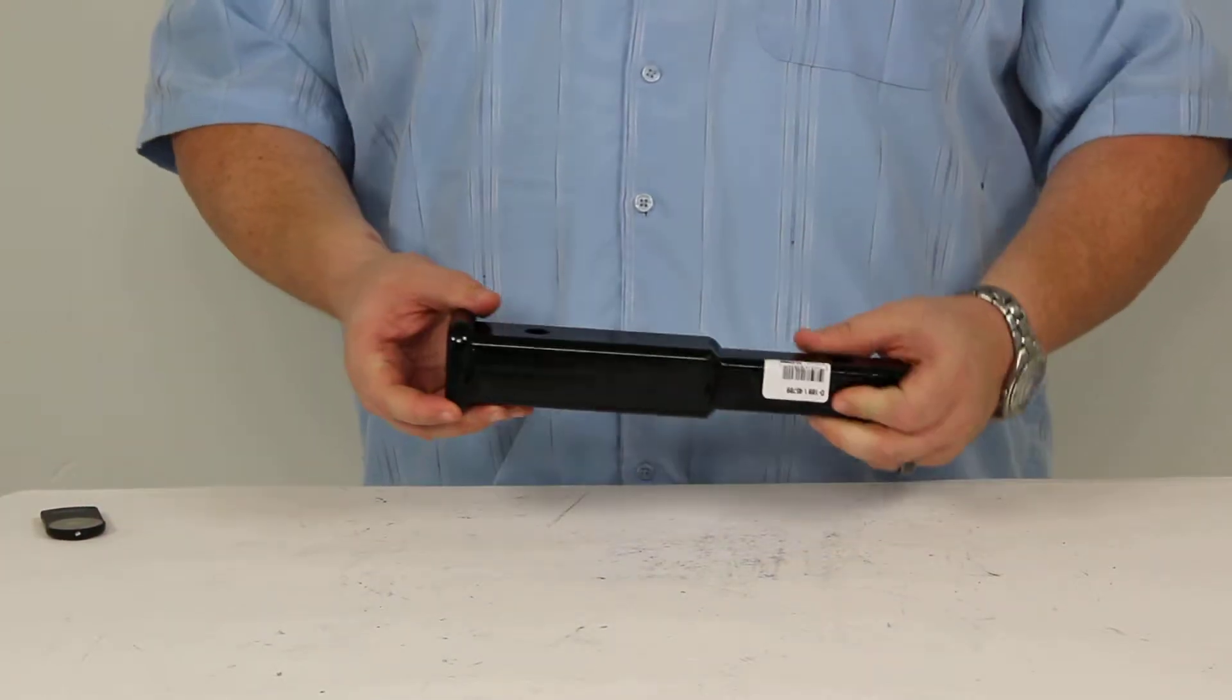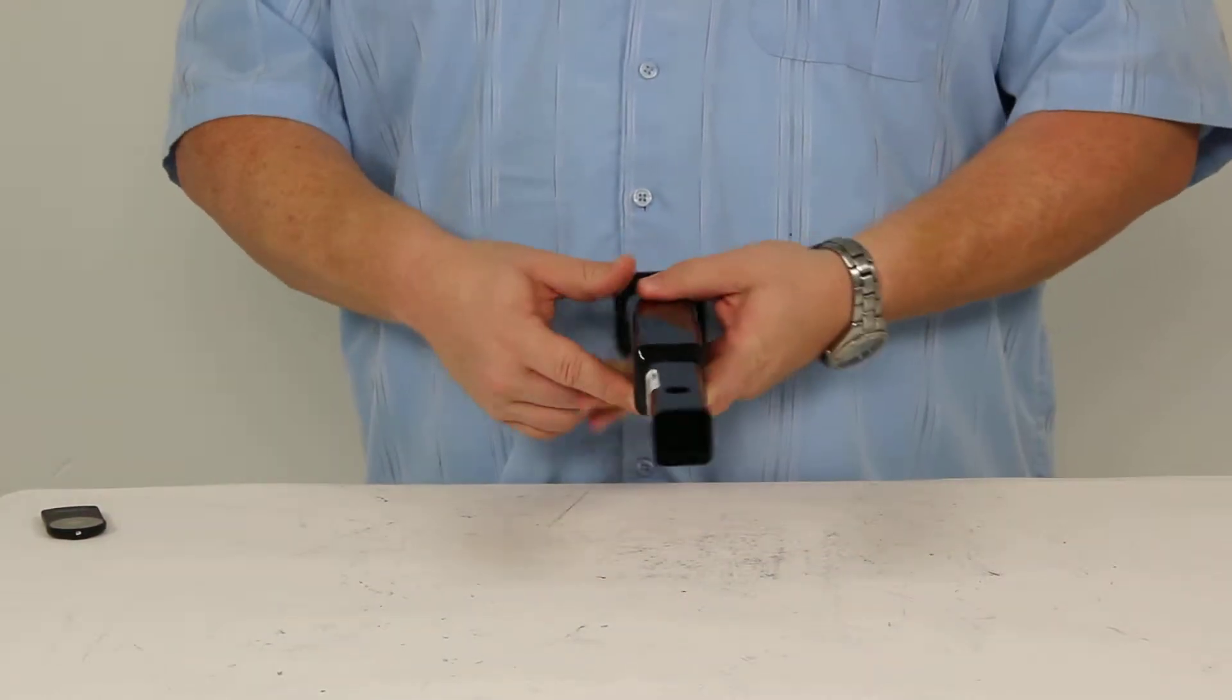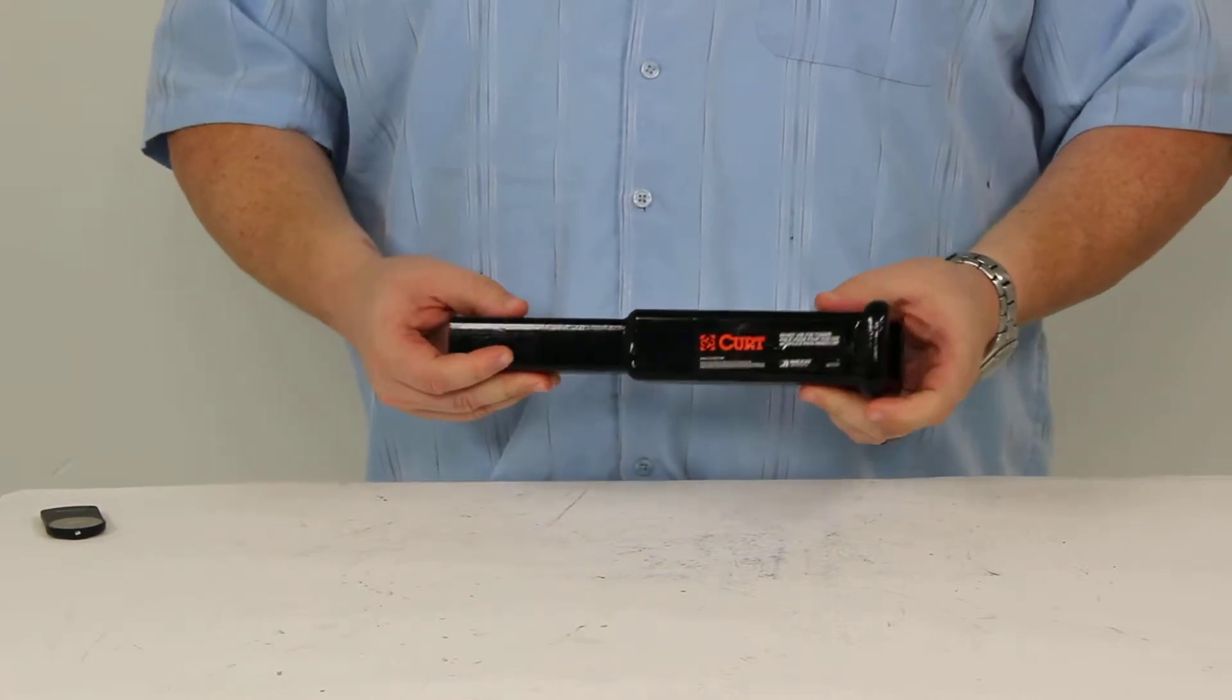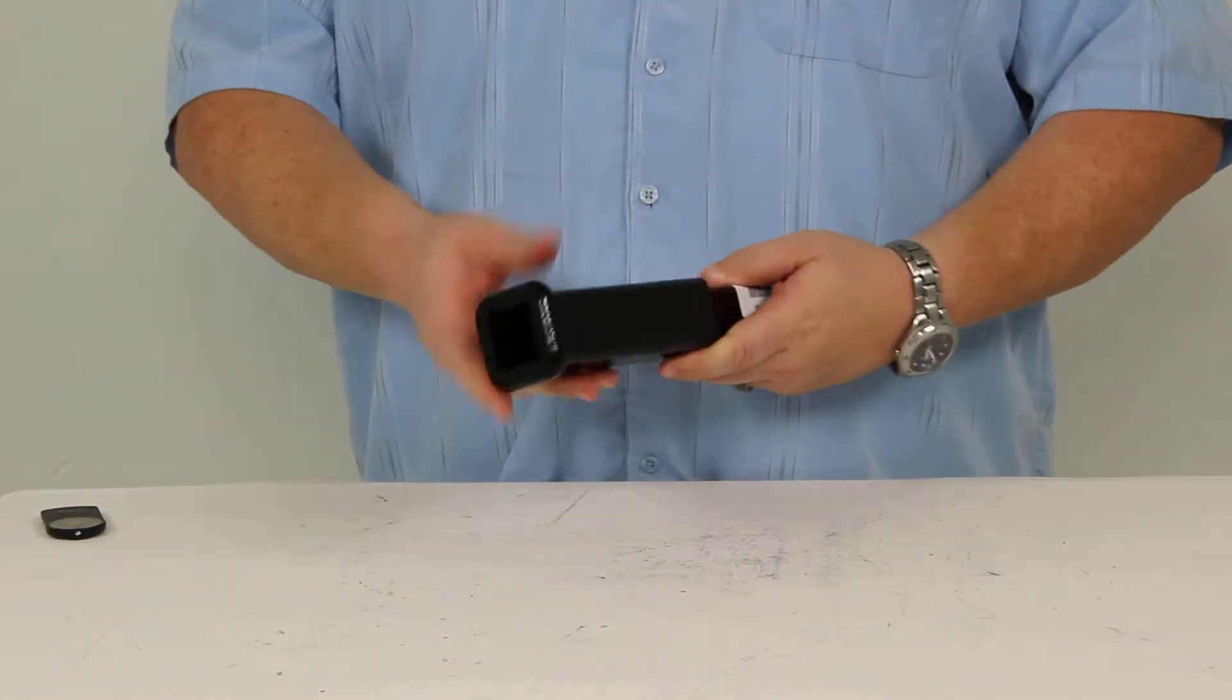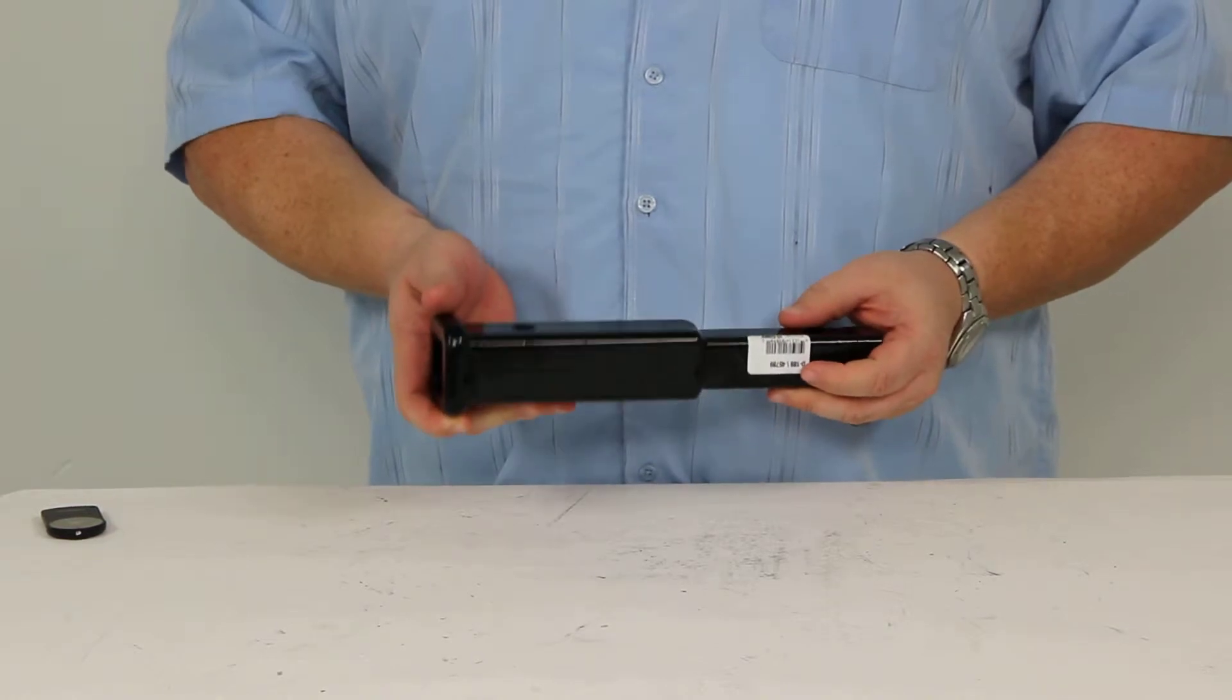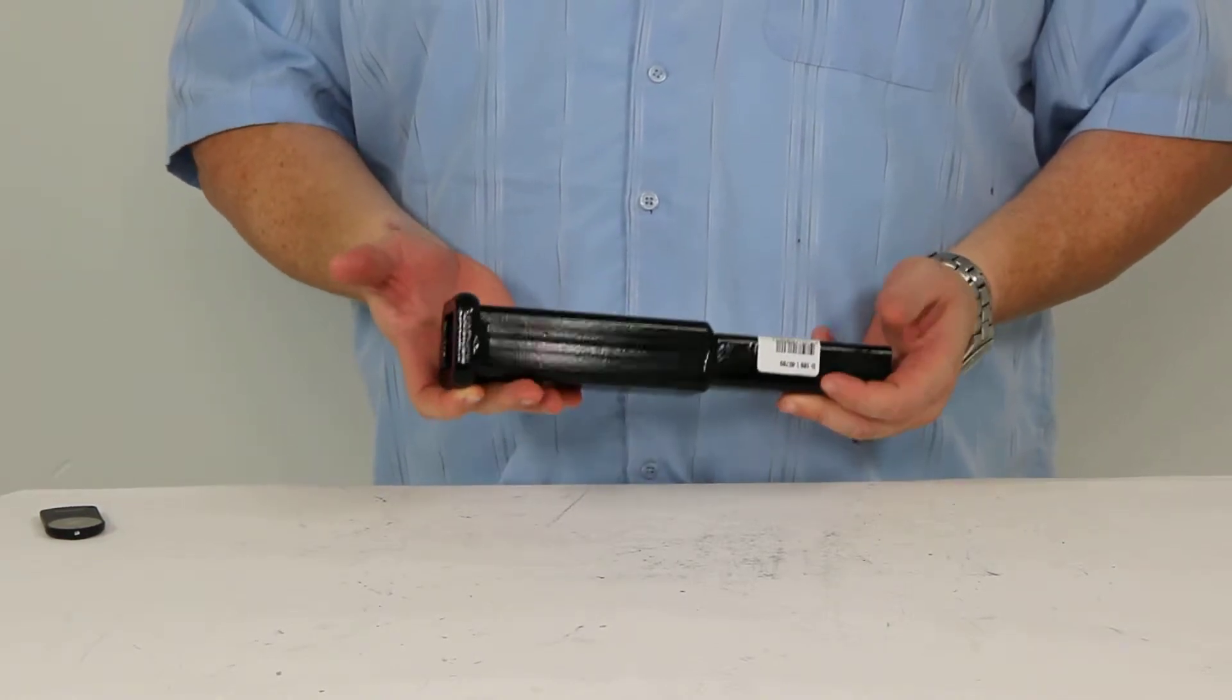Today we're going to take a look at the Curt Hitch Extender for 1 1/4 inch trailer hitch receivers, number D189. This is for use with class 1 and 2 hitch accessories like bike racks and cargo carriers.